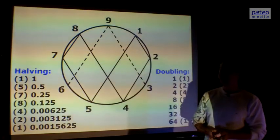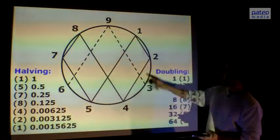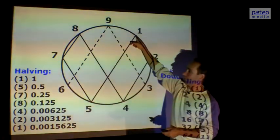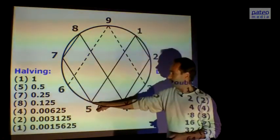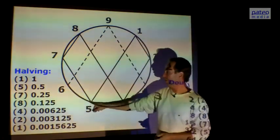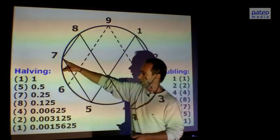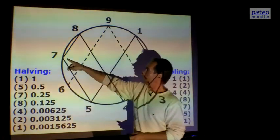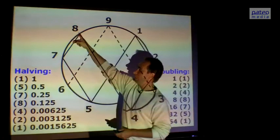Let's see what happens when we halve, when we start halving. If we halve 1, we get 0.5, which is 5. If we halve 0.5, we get 0.25. 2 plus 5 is 7. If we halve 0.25, we get 0.125, which is 8.